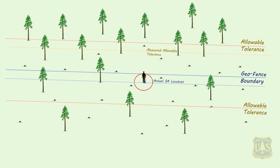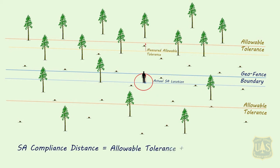Therefore, the maximum GPS accuracy error, or worst-case scenario, will need to be added to the allowable contract tolerance to determine if the operator is in compliance. The sale administrator will use the SA compliance distance — the allowable contract tolerance plus the sale administrator's GPS accuracy error — when determining contract compliance. To minimize the area of risk, the GPS receiver used by the sale administrator should be very accurate, requiring a good GPS receiver with low inaccuracy errors. The smaller the accuracy error, the better we are able to determine contract compliance.